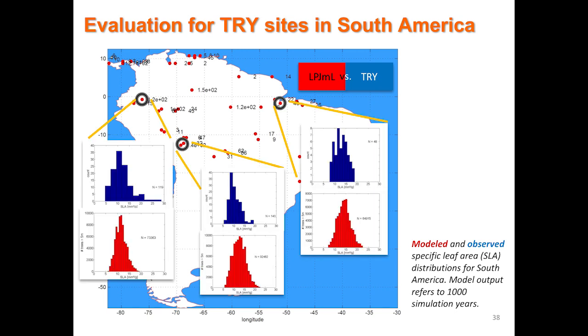We have to do a validation. Here I show it for three selected sites where we have data from the TRY database, and we did this comparison for more sites across tropical South America. We found good agreement between the simulated distribution of SLA and the observed distribution. Remember: we put in a uniform distribution, and through competition this is what comes out. Having no dispersal or trait inheritance included in this model version means ecological sorting is the driving mechanism — and this has been confirmed by the literature for leaf economics.